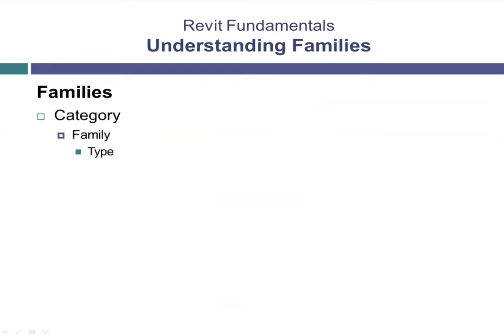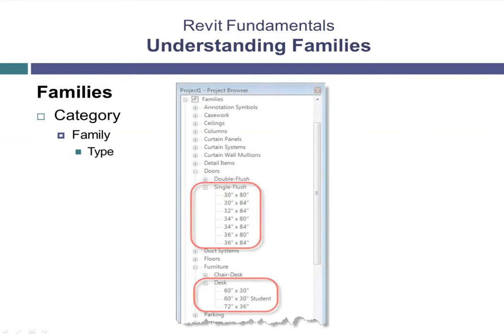For example, if you expand the single flush door family, you can see a number of different sizes. If you expand the desk family, you can see several different sizes. Each size is a family type, or type, and has type properties that give it its specific size.